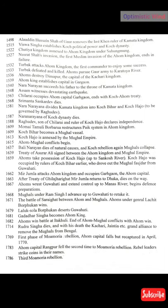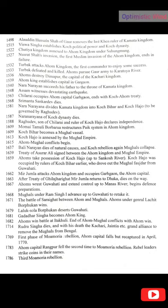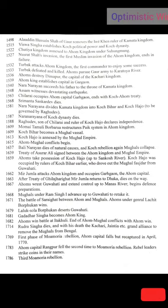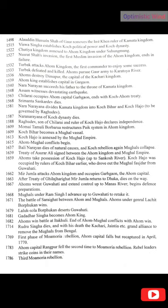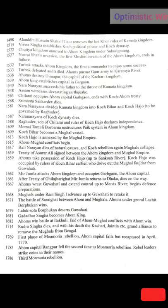In 1498, Alauddin Hussain Shah of Gaur removes the last Khen ruler of the Kamata kingdom. In 1515, Biswa Singha establishes the Kuch political power and Kuch dynasty. In 1522, the Sutia kingdom is annexed to the Ahom kingdom under Suhungmung. In 1522, Nusrat Shah's invasion — the first Muslim invasion of the Ahom kingdom — ends in failure. In 1532, Turbak attacks the Ahom kingdom and is the first commander to enjoy some success.